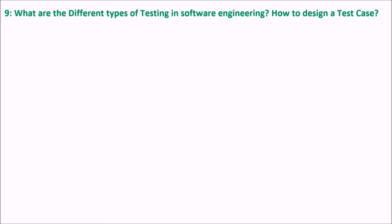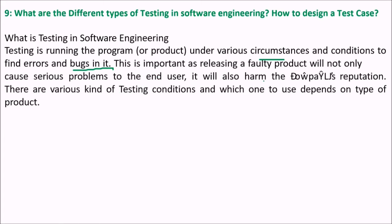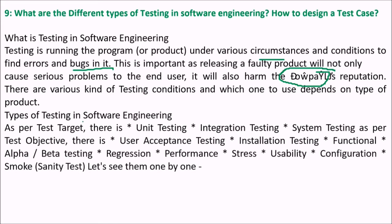What are the different types of testing in software engineering, and how do you design a test case? Testing is running the program or product under various circumstances and conditions to find errors. Releasing a faulty product will not only cause serious problems to the end user but also harm the company's reputation. Types of testing by test target include unit testing, integration testing, and system testing. By test objective: user acceptance testing, installation testing, alpha and beta testing. Other types include regression, performance, stress, usability, configuration, and smoke (sanity) testing. In unit testing, debuggers, tracers, and programmers are used; it verifies the functioning of software pieces in isolation.